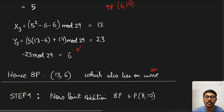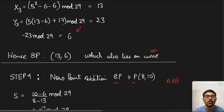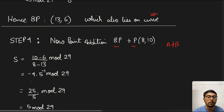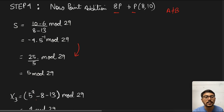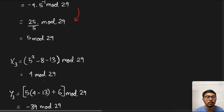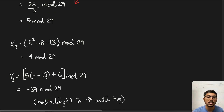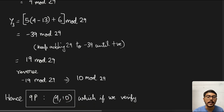Step 4 is point addition: 8P + P = 9P. Now the two points are different — A ≠ B — so we use the addition formula: s = (y2 − y1)/(x2 − x1) mod 29. Simplifying gives −4 × 5⁻¹ mod 29, which becomes 25 × 6 mod 29 = 5. Then x3 = 5² − 8 − 13 = 4 mod 29. Putting x3 = 4 into the y3 equation gives −39 mod 29; adding 29 twice gives 19, and mirroring gives −19 mod 29 = 10. Hence 9P = (4, 10).